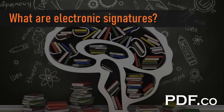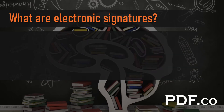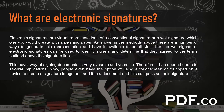What are electronic signatures? Electronic signatures are virtual representations of a conventional signature, or a wet signature, which you would create with a pen and paper. As shown in the methods above, there are a number of ways to generate this representation and have it available to email. Just like the wet signature, electronic signatures can be used to identify signers and determine that they agree to the terms outlined above the signature line.